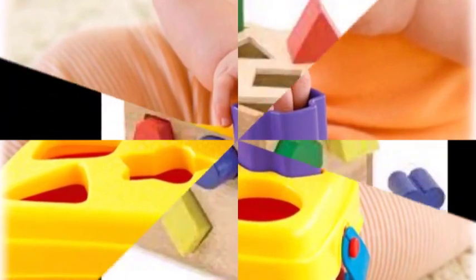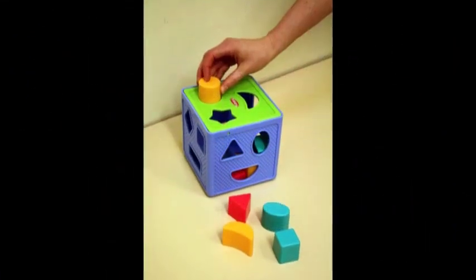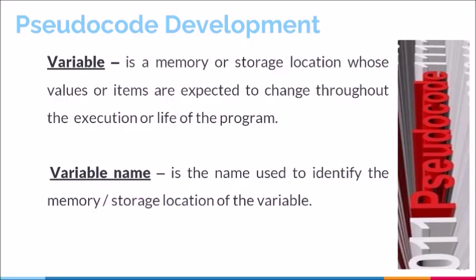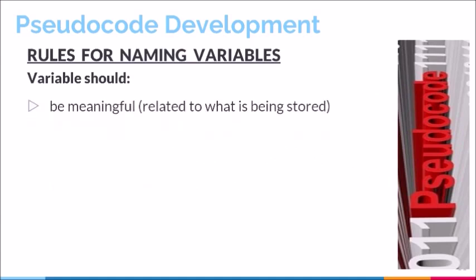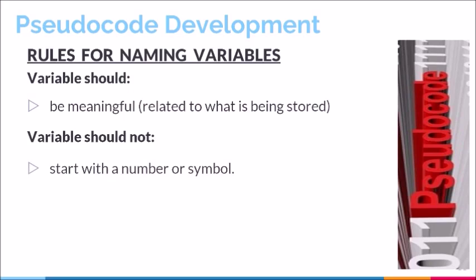There are special rules used to guide in the naming of variables. Rule one: variables should be meaningful, meaning the name should be related to what is being stored. When writing programs, you will notice a number of variables, and it is required that each variable has a meaningful name in relation to whatever is being stored in it. Rule two: variables should not start with a number or symbol. The syntax of the language will specify that a variable name must always start with a letter.